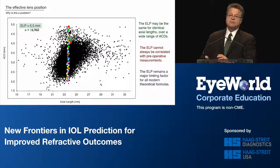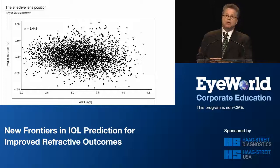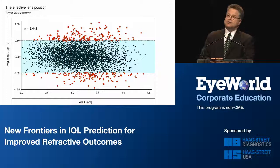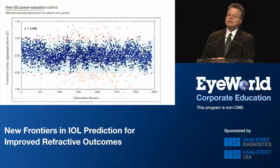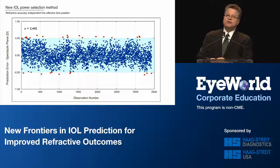Here's the database on the RBF method we're currently using. This is SRKT — these are all the cases outside half-diopter accuracy for about 3,400 cases. Here's that same database with the new method, and you can see the cases outside half-diopter accuracy are dramatically reduced.